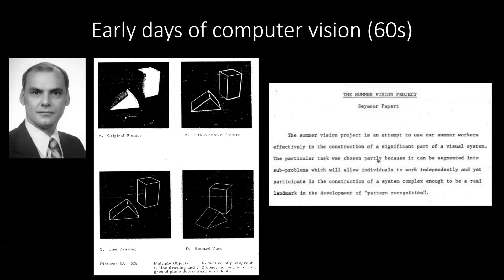In 1966, there was this interesting story - it's actually a true story. Seymour Papert, a guy from MIT, gave his students a task as a summer project: go and solve this computer vision thing. Try and create a visual system that will mimic the one that humans have. That was in 1966.